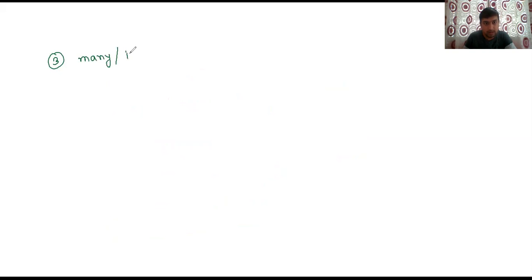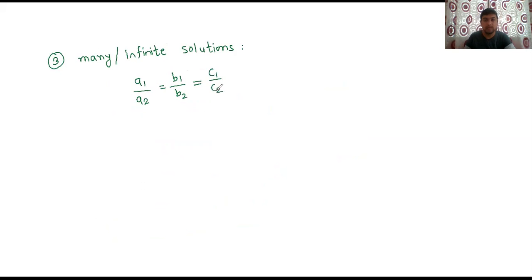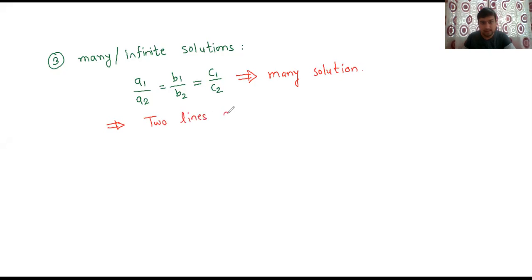Third condition: many solutions, or infinite solutions — that means there are a number of values of x and y. The condition for this is: a1/a2 is equal to b1/b2, and is also equal to c1/c2. Then the given system of linear equations will have many solutions. The geometrical meaning is that the two lines are coincident.